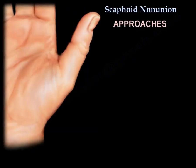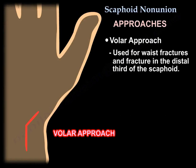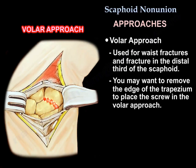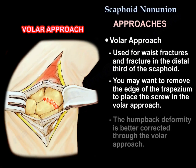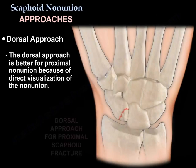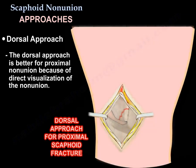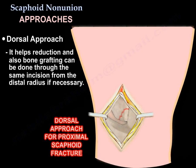Regarding the surgical approach: for waist and distal third fractures, a volar approach is used. You may need to remove the edge of the trapezium to place the screw in the volar approach. Humpback deformity is better corrected through the volar approach. The dorsal approach is better for proximal non-union due to direct visualization, and bone grafting can be done through the same incision at the distal radius if necessary.